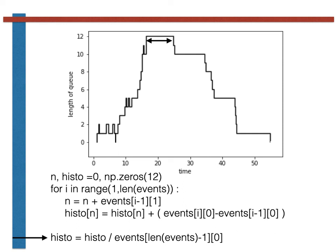The last line of the code here normalizes the histogram and converts the numbers in this array from being in units of time to being fractions that do not have a unit. Notice finally that we can normalize by dividing by the first number in the pair that is the final element of events as this will be the time that the final customer we dealt with left the queue.